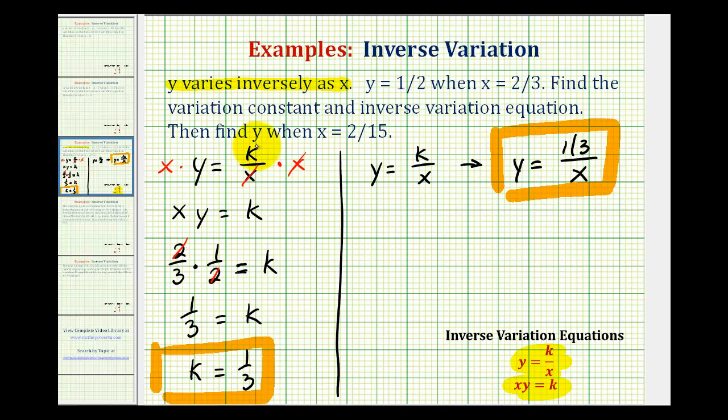And then for the last part, we're asked to find y when x equals two-fifteenths. So we'll substitute two-fifteenths for x and solve for y. So we'd have y equals one-third divided by two-fifteenths. Again, remember this fraction bar means division.